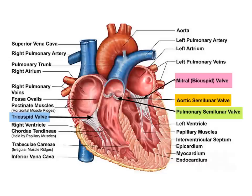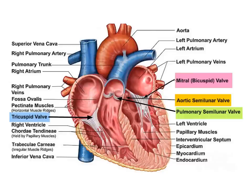Here you can see the right ventricle and the left ventricle. You can notice that the wall of the left ventricle is thicker than that of the right ventricle. This is a physiological adaptation because the left ventricle needs to perform greater work in pumping blood through the aorta throughout the systemic circulation, whereas the right ventricle only needs to pump blood through the pulmonary artery to the lungs. As the left ventricle needs to perform greater work, it has been physiologically adapted so that its walls are thicker, allowing greater contraction.